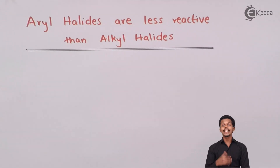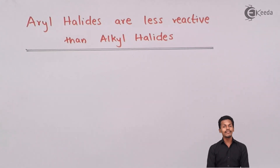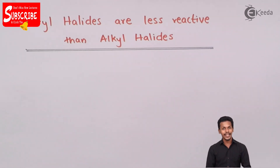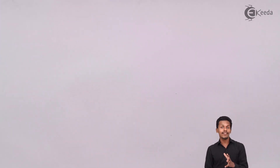Aryl halides are less reactive than alkyl halides. To understand that, we have to understand what character would be exhibited by the aryl halides, and that would be represented with the following diagram. The structure of the aryl halide will help us understand why aryl halides are basically less reactive compared to alkyl halides, and there are also various reasons that we are going to talk about.